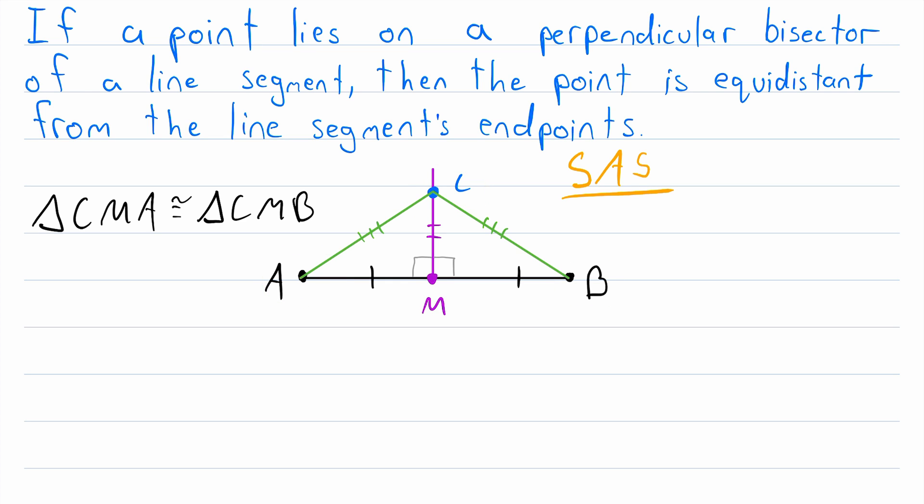And therefore, in every possible case, whether this point is on the line segment or not, if a point lies on a perpendicular bisector of a line segment, then the point is equidistant from the line segment's endpoints.